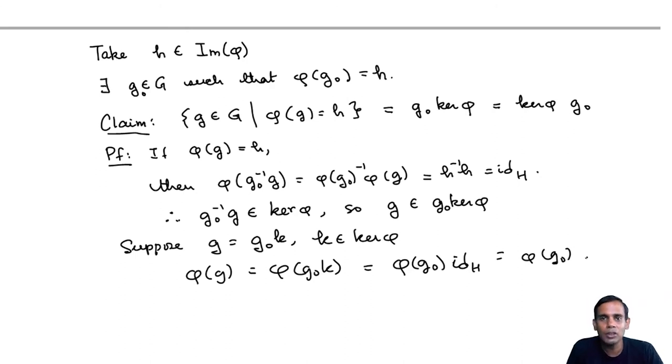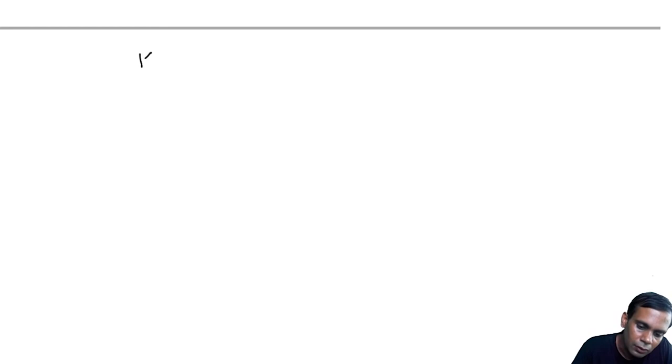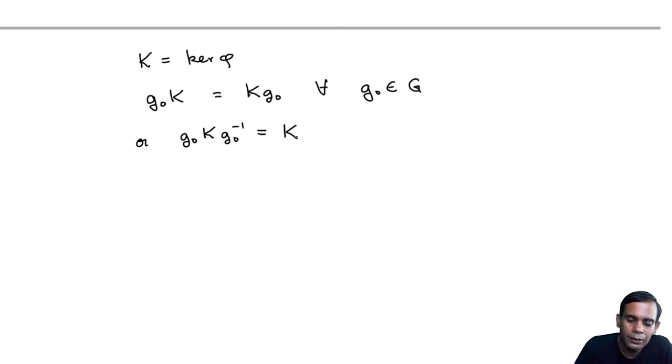So what we see is that when you have a homomorphism, its kernel is a very special kind of subgroup. Its left cosets are also its right cosets. Writing K for the kernel of phi, what we just saw is that G0 K is K G0 for all G0 in G. This argument that we had earlier applies to any element of G. This can be rewritten as G0 K G0 inverse is equal to K, multiplying both sides by G0 inverse.